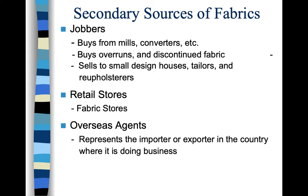A secondary source of fabric is something a regular consumer would come into contact with. For example, if you have a small brand or an Etsy shop making handbags, you might buy fabric wholesale from a jobber — you're not getting it from the primary source. Secondary sources include jobbers, retail stores, and overseas agents. They bought it from someone and now they're selling it to you, so it goes through a middleman.